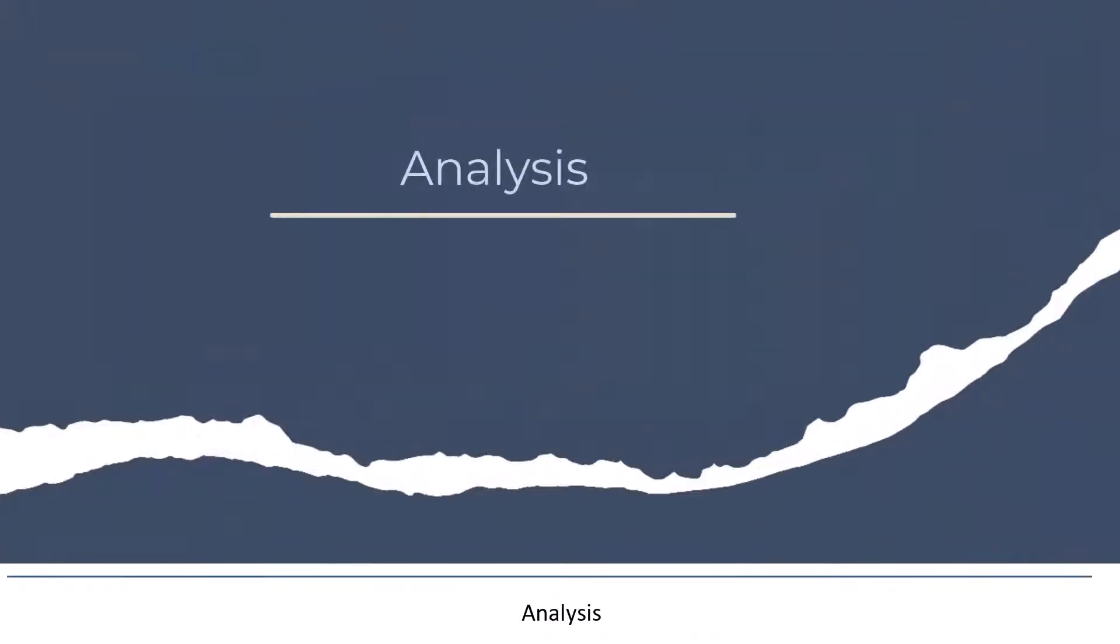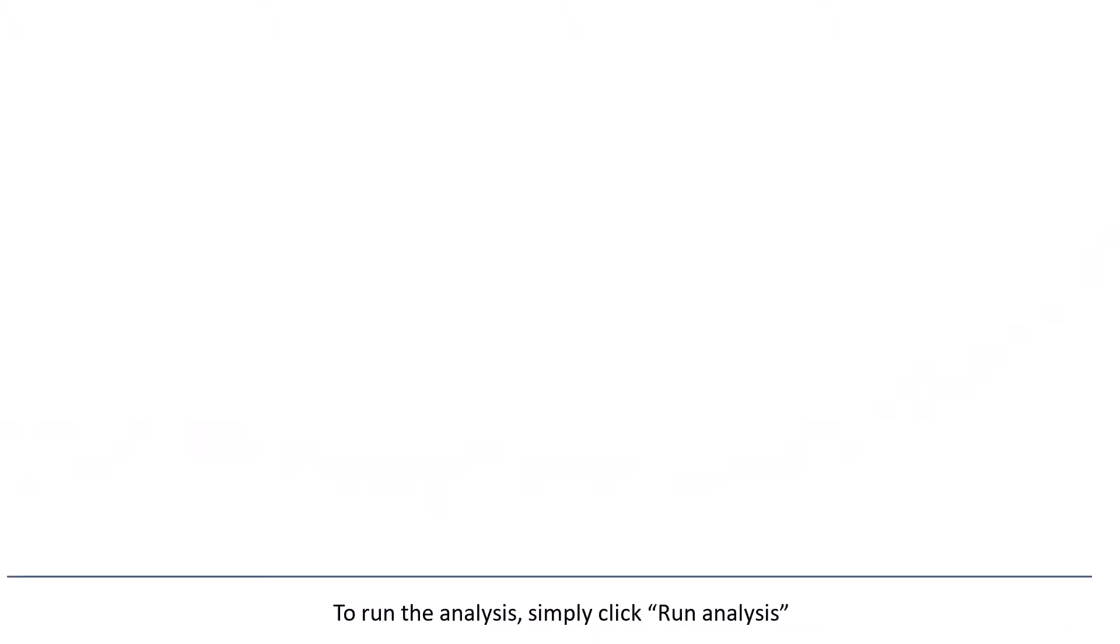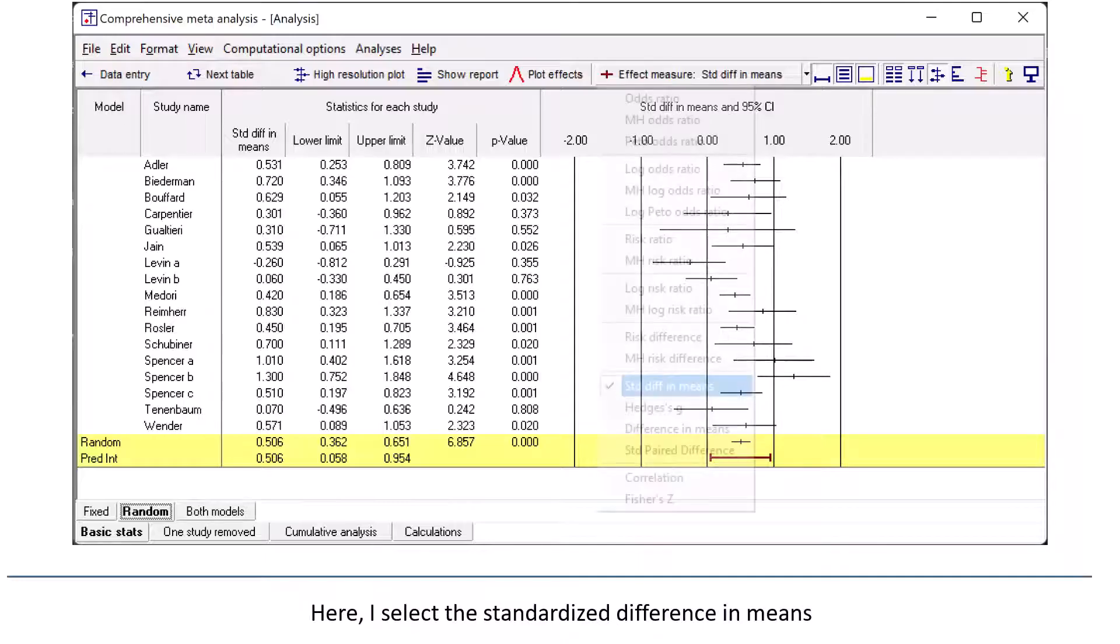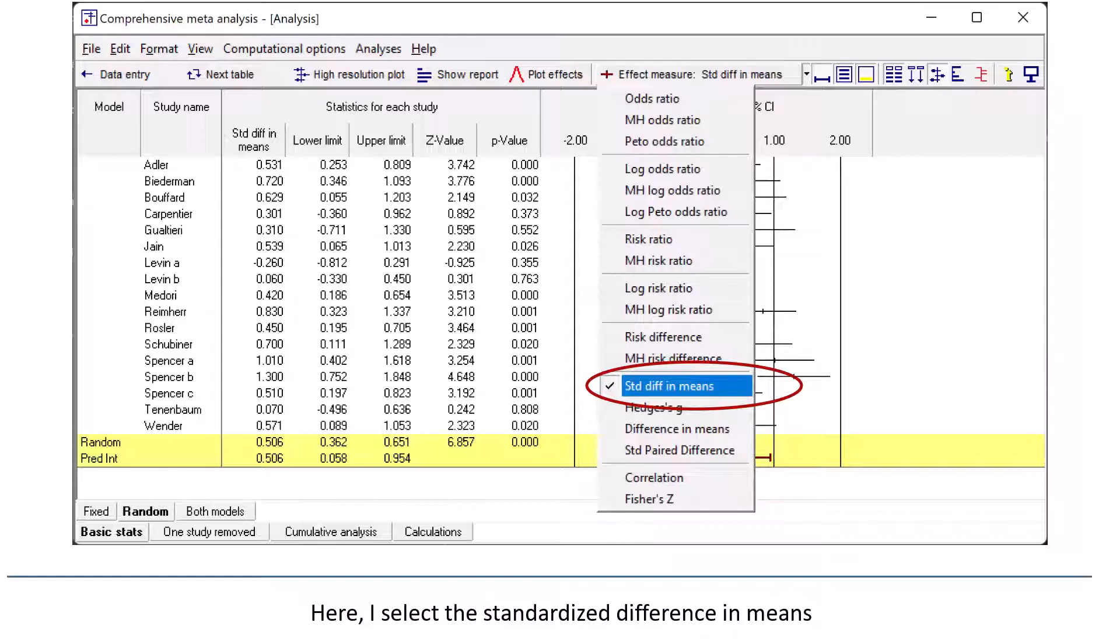Analysis. To run the analysis, simply click Run Analysis. This is the main analysis screen. I can select an effect size index. Here, I select the standardized difference in means.